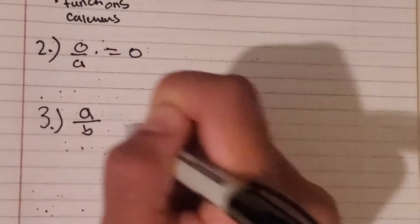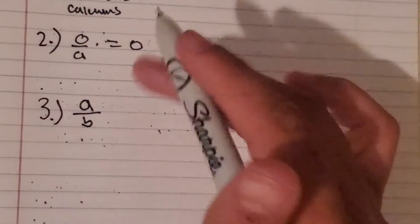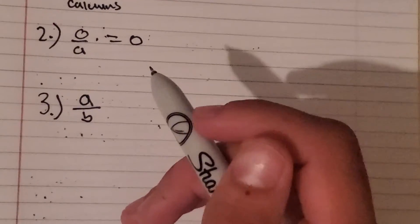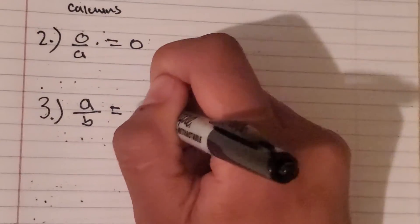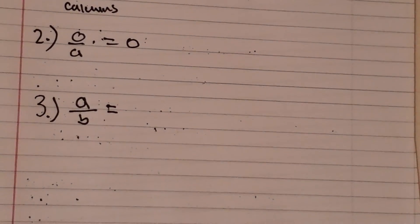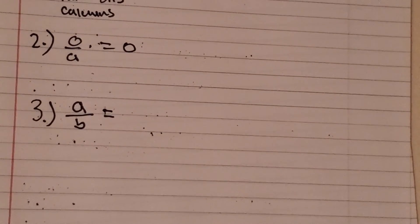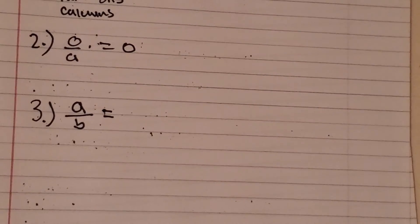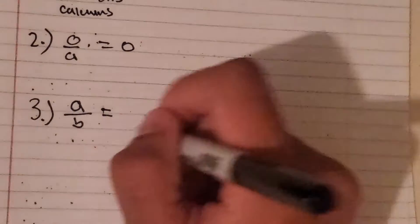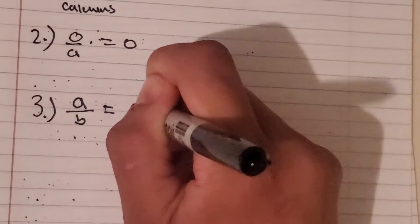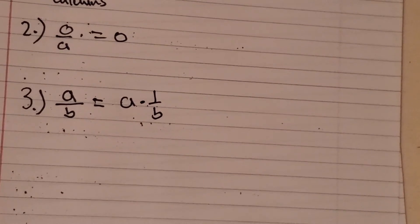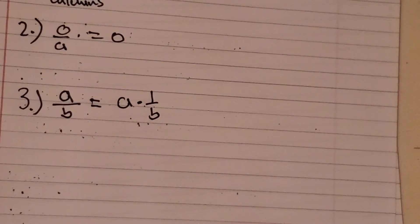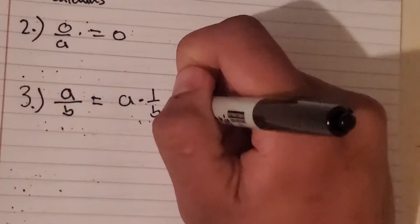Now our third division property: if we have a number A divided by another number B, we could write division as multiplication — but instead of multiplying by B, it'd be the inverse of B, which is 1 over B. This is what we call the reciprocal. So A divided by B is the same as A times 1 over B. This is really cool because it allows us to do a lot of different work with equations, which we'll talk about in a future video. Division can be written as multiplication.